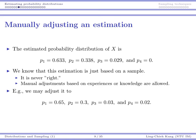If we have more data, we can make our estimation more accurate. Please remind yourself that this estimation is just based on a sample — based on the two-year observations we have — so it is never exactly right. For tomorrow, we can use these four numbers to do our prediction, but we never know whether the probability of getting a sunny day is really 63%.